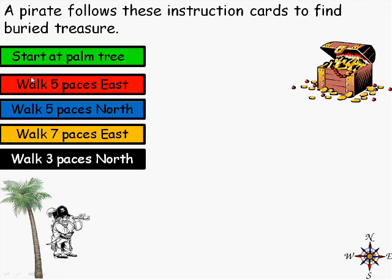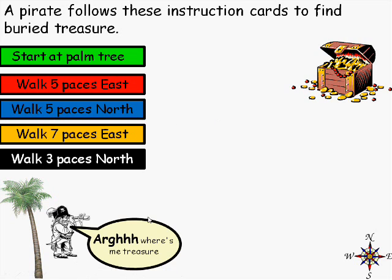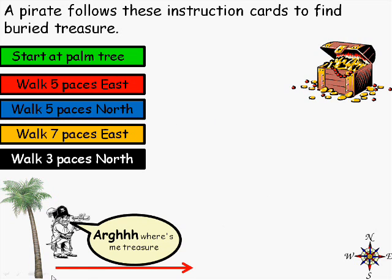You can see them - he has to start at the palm tree, and this is the order of the instructions: walk five paces east, so he walks five paces east, and then five paces north, seven paces east, and three paces north. And he gets to the treasure.